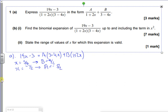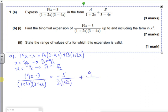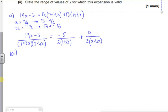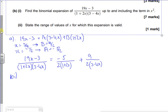Now I think it's always important to write it back out, so 19x minus 3. So part A, I'm just working on the idea that you can still do partial fractions. And it's part B which people have been asking me about. So it's minus 5 over 2 lots of 1 plus 2x, plus 9 over 2 lots of 3 minus 4x.